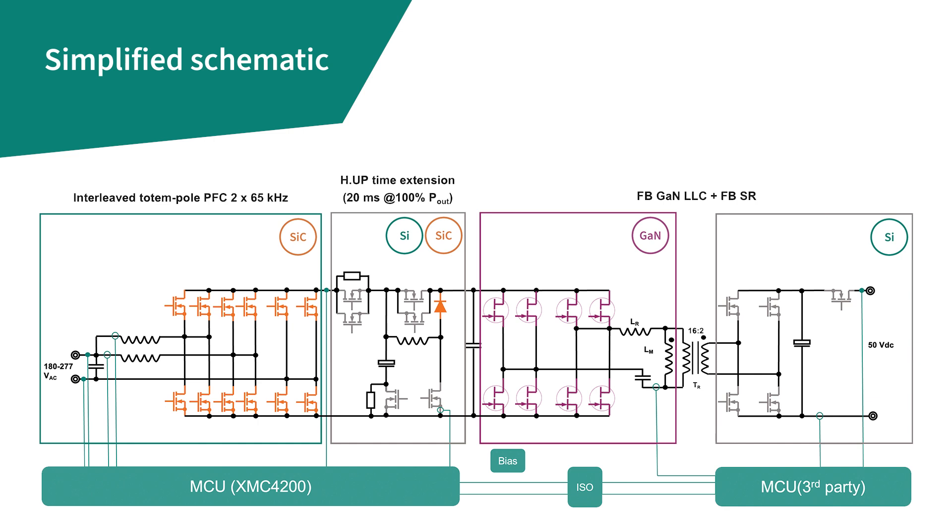This stage rectifies the AC input to 405 volts DC and provides power factor correction functionality and current total harmonic distortion or ITHD functionalities. The second DC-DC conversion stage is a full-bridge primary, full-bridge secondary, resonant LLC DC-DC converter.